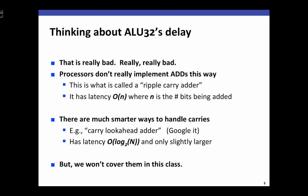It turns out that delay is bad — really, really bad. Processors don't implement their adders this way. This is called a ripple carry adder, which, because the carry chain goes through every bit of the adder, has a latency of order N, where N is the number of bits being added. In our 32-bit adder, the delay is proportional to the delay of each adder times 32. There are much smarter ways of handling carries — one popular design is a carry look-ahead adder, which has a latency proportional to log base 2 of the number of bits, and is only slightly larger than what we're designing in this class.